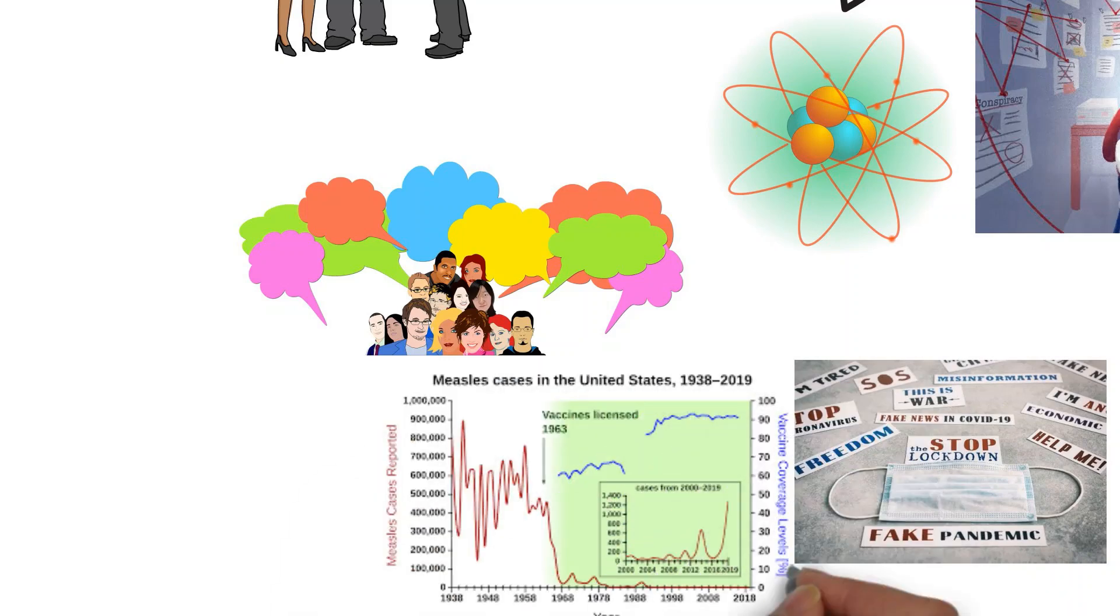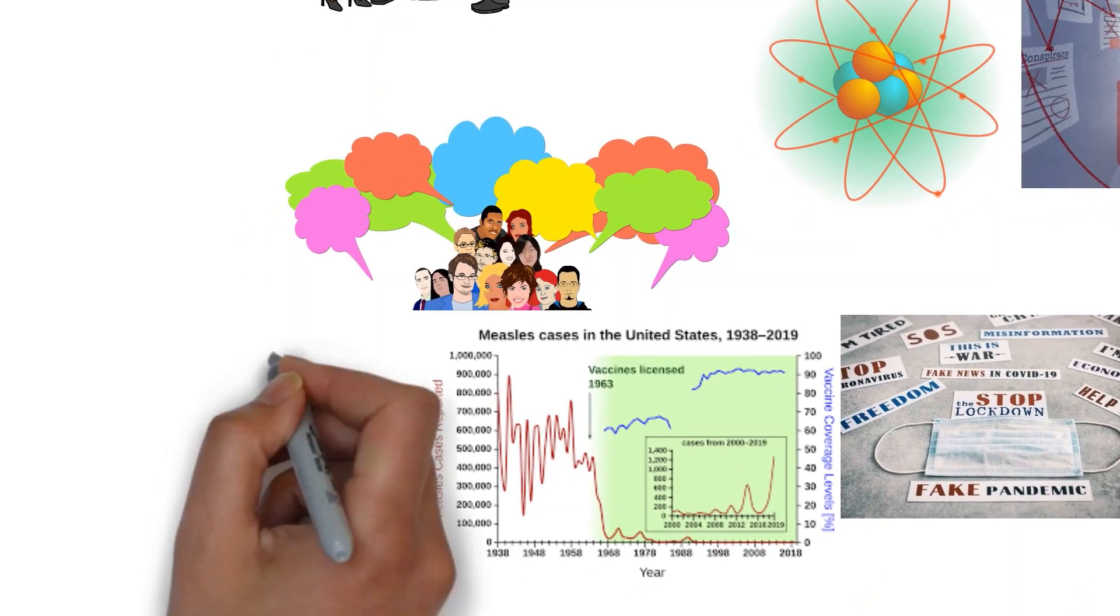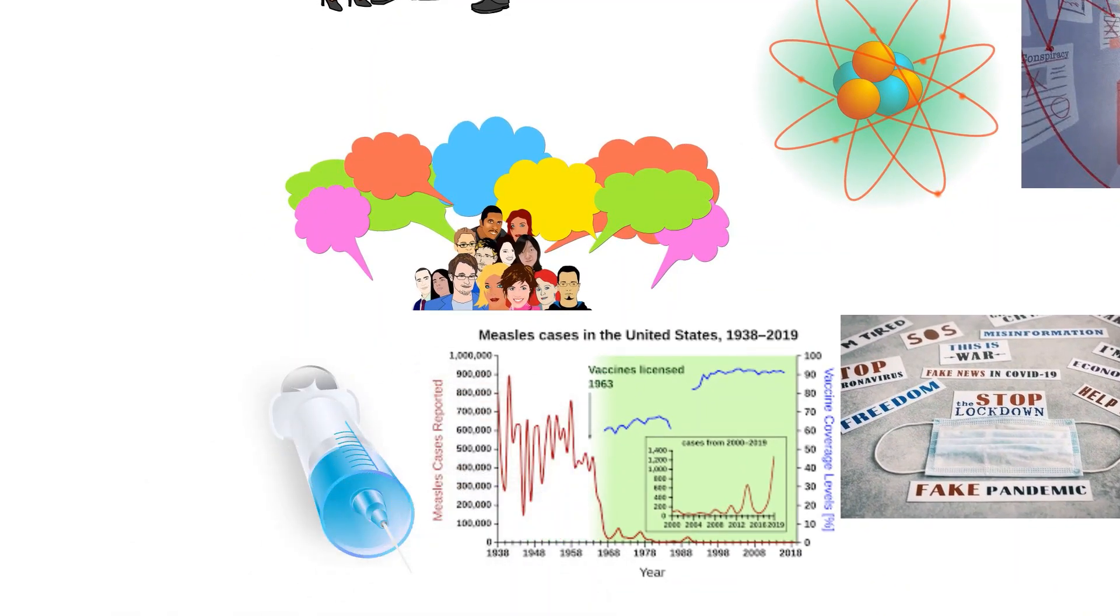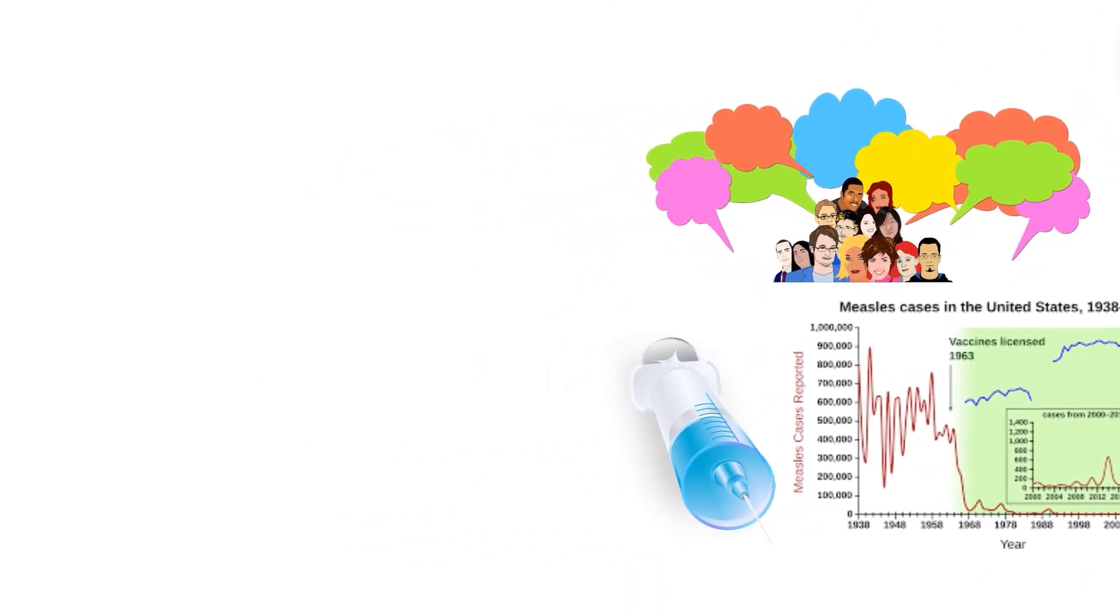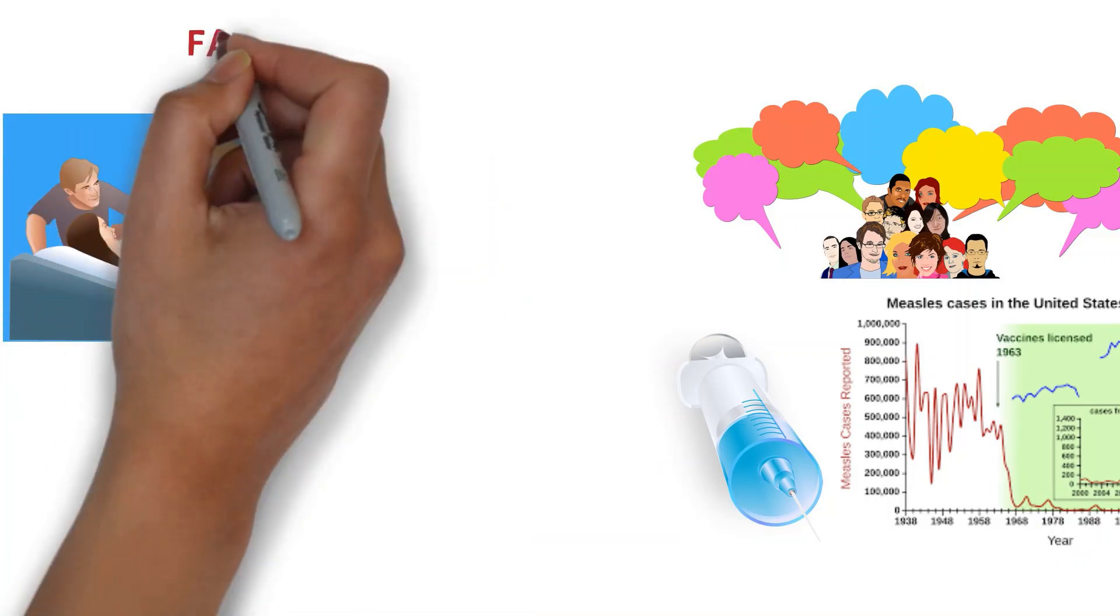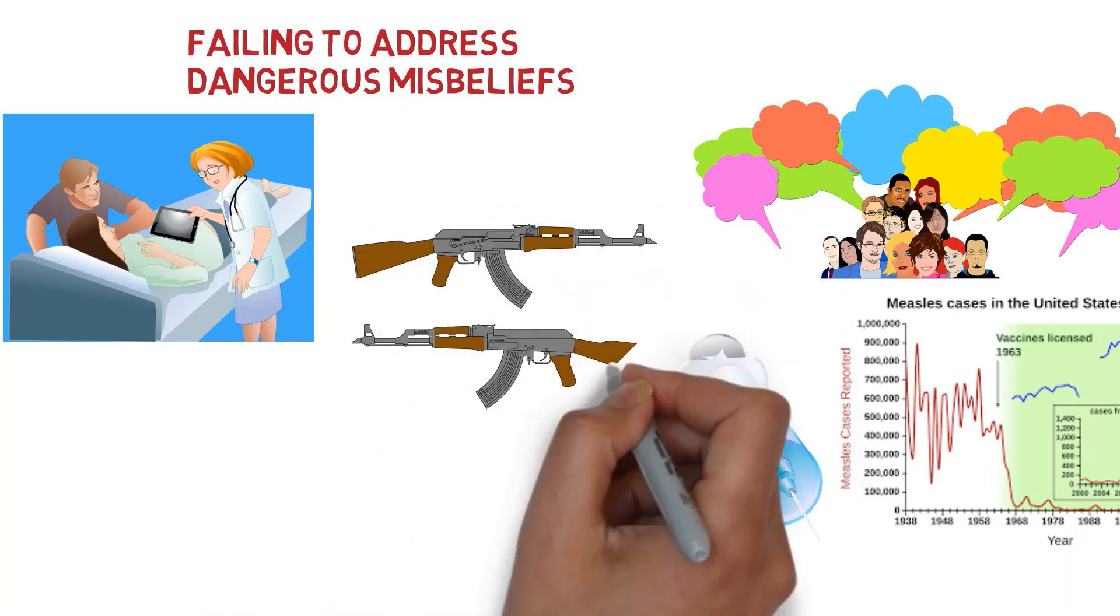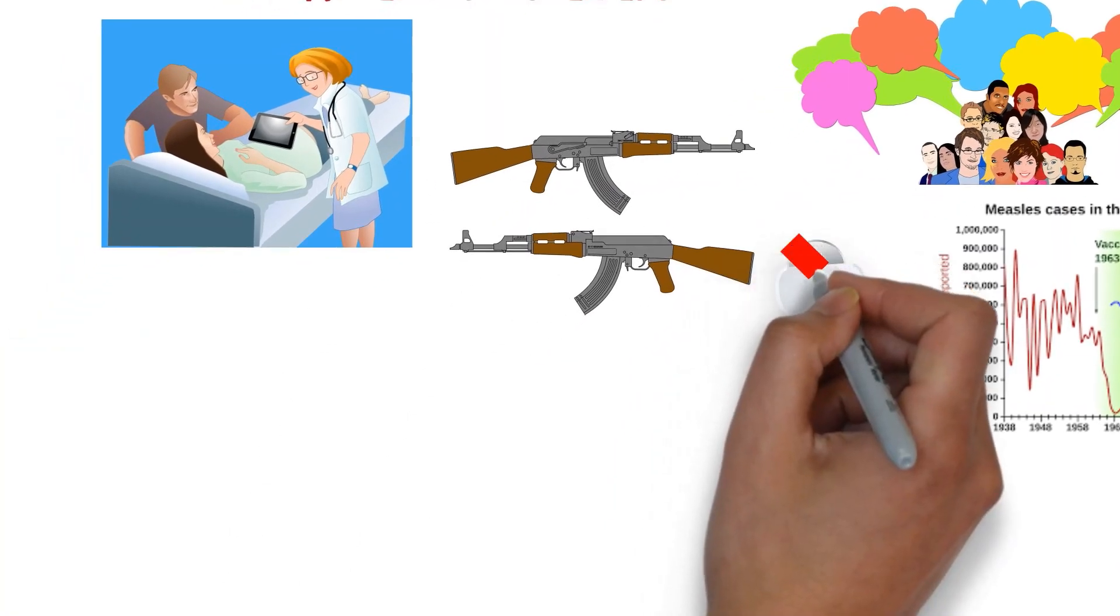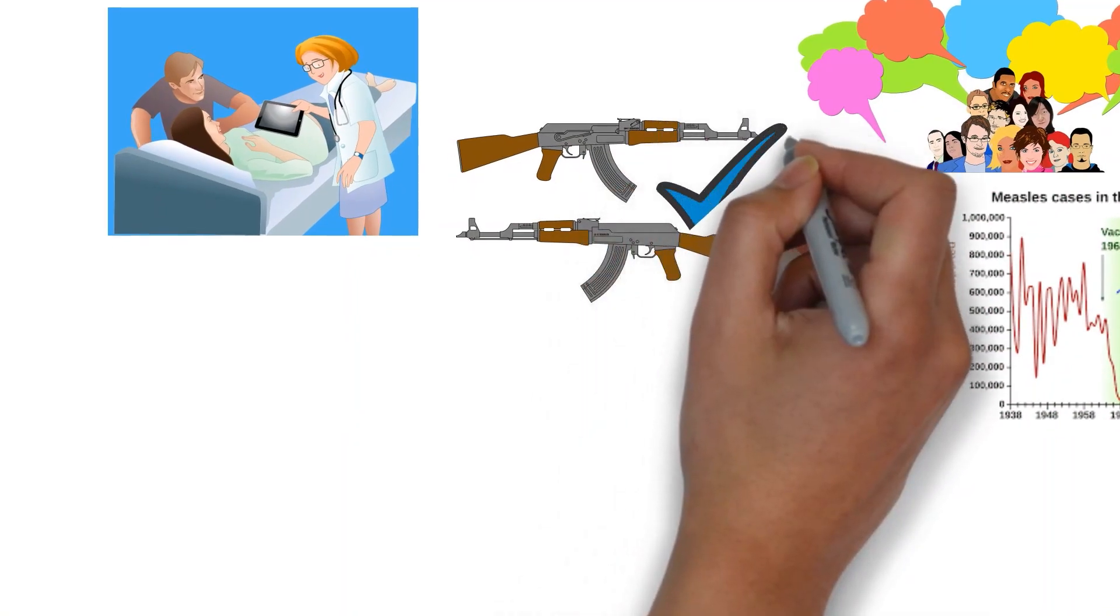For instance, a resurgence in measles outbreaks in the US has been largely attributed to a refusal by some individuals to vaccinate. A refusal that stems largely from the conspiratorial belief that vaccines cause autism and other health ailments. Failing to address dangerous misbeliefs presents a potential danger to public health and the political process itself. Faulty beliefs can lead people to not vaccinate, not vote, or even engage in dangerous or violent behavior.